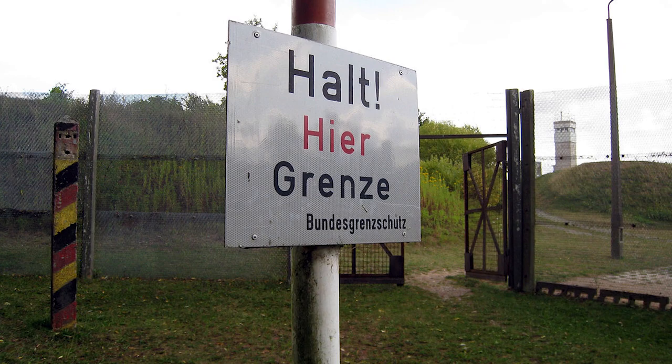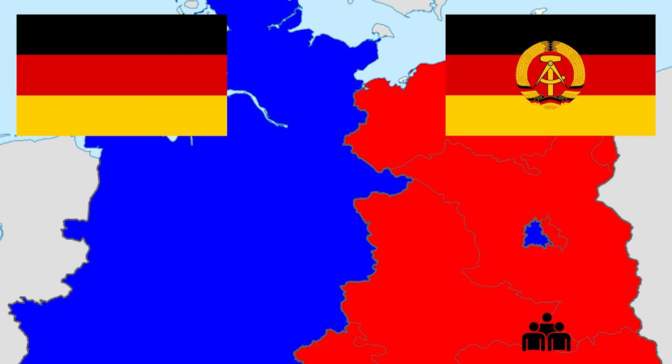The border between West and East Germany was closed. However, the border between West and East Berlin was not. So many people who wanted to go from East to West, Berlin was their gateway. Between 1949 and 1961, an estimated 3 million people fled from East to West. These were mostly highly educated young people. According to the East German Communist authorities, this had to end.